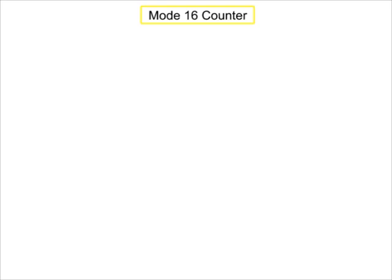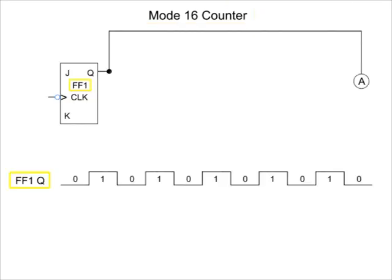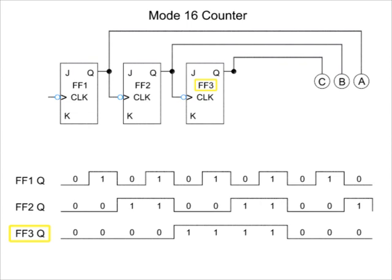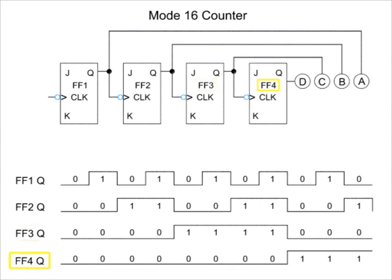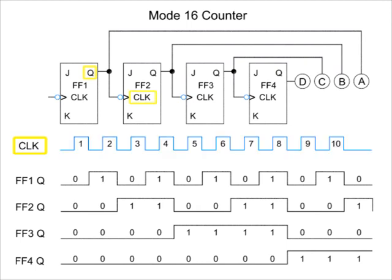A Mode 16 counter uses four JK flip-flops as diagrammed here. In this circuit, the output at Q becomes the clock input for the next JK flip-flop. Each JK flip-flop is open, thus they are set automatically to High, or 1, which keeps them in their toggle position.